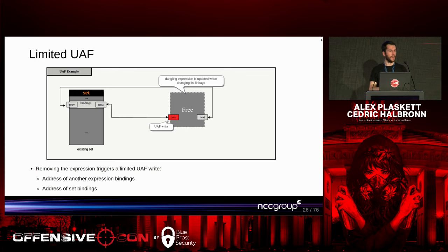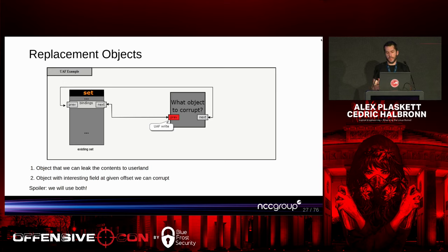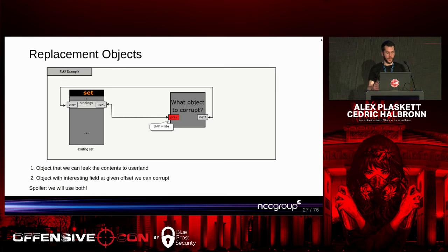The bug gives us a way to write a pointer into a free chunk — it could be either the address inside a set or inside an expression. Writing to a free chunk is useless by itself, so we want to replace that free chunk with some other object we control, then trigger the limited write primitive to override the pointer inside that chunk — which is no longer free — and corrupt a potential object. From there we either use it to write a pointer we can leak back to userland, or we corrupt something else to improve our privileges beyond just a write primitive of a pointer.